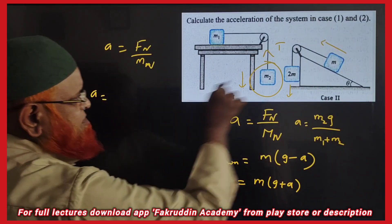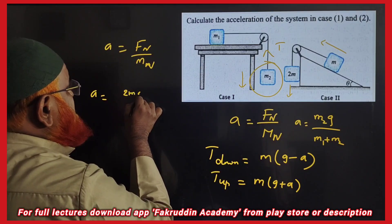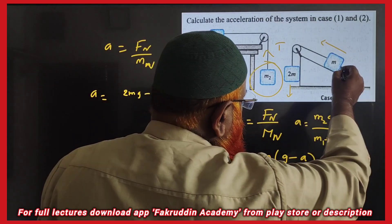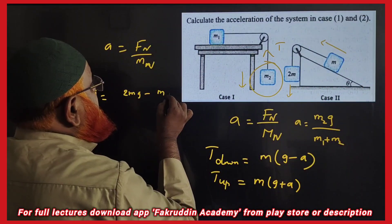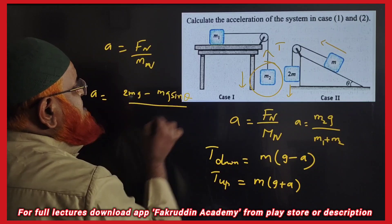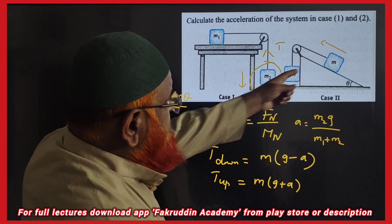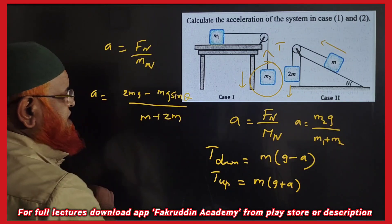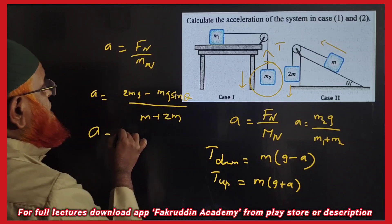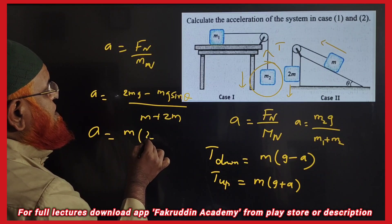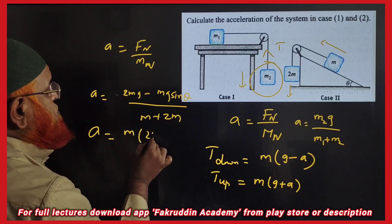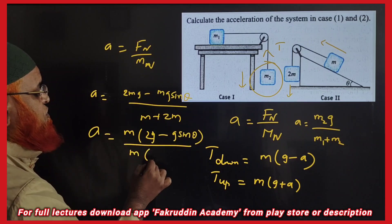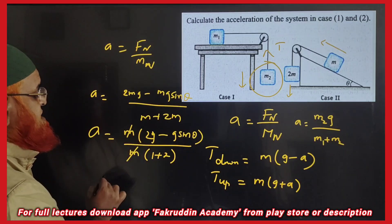You can write acceleration as 2MG minus the component of the inclined plane mass, which is MG sine theta, divided by total mass M plus 2M. Cancelling M, the numerator becomes 2G minus G sine theta, and the denominator is 1 plus 2, that is 3. So M gets cancelled.